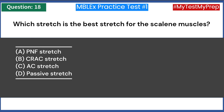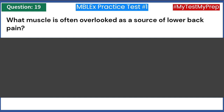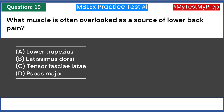Which stretch is the best stretch for the scalene muscles? A) PNF stretch. B) CRAC stretch. C) AC stretch. D) Passive stretch. Answer: D — passive stretch. What muscle is often overlooked as a source of lower back pain? A) Lower trapezius. B) Latissimus dorsi. C) Tensor fascia lata. D) Psoas major. Answer: D — psoas major.